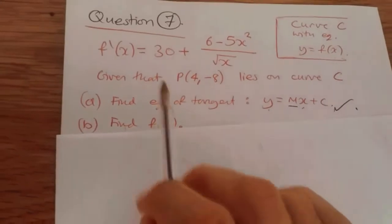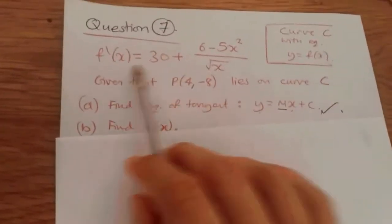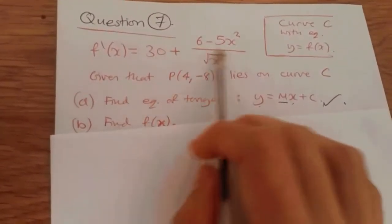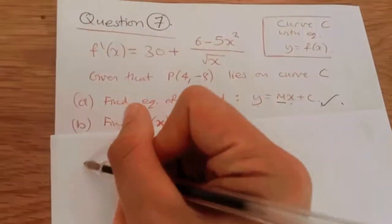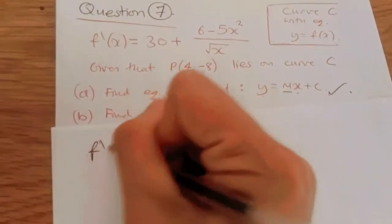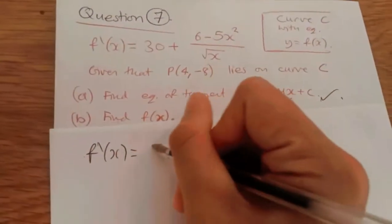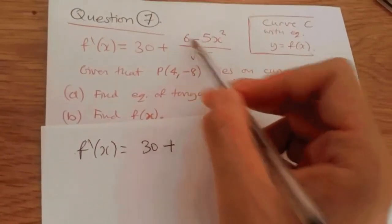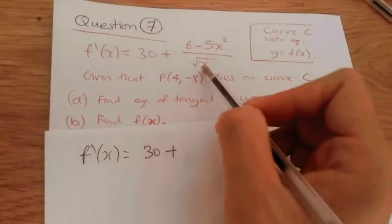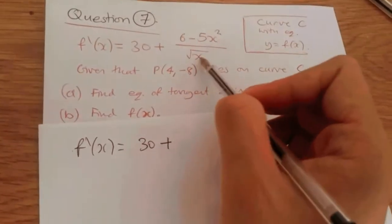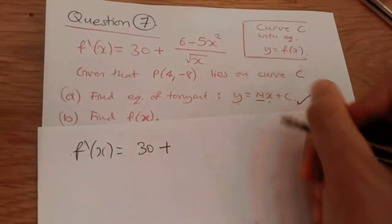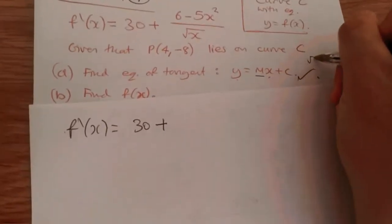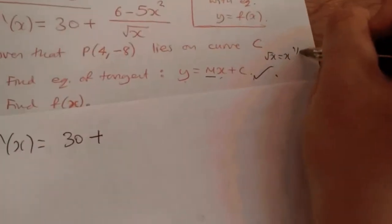So here they just want us to find f(x), i.e. the integral of this. First we integrate this, we need to rewrite this part into standard form. So let's do it. So rewrite this equation. We should get 30 plus, now I'll split this up. I'll do 6 over root x minus this term over root x. 6 over root x, we know root x is x to the power half. So just a key note here: root x is x to the power half.